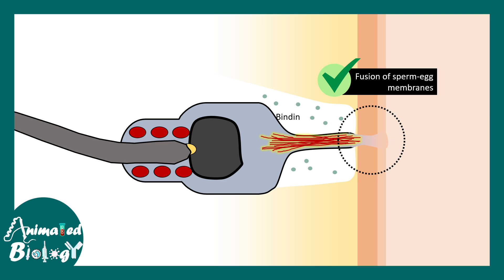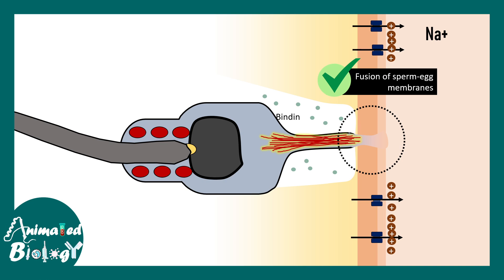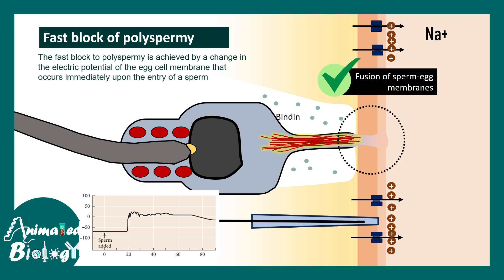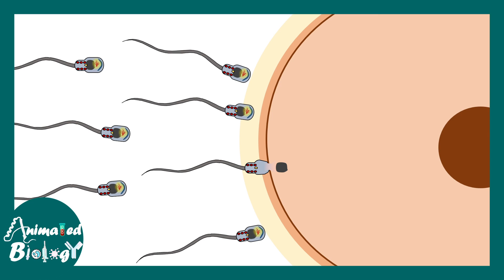The moment fusion happens, there is a quick influx of sodium ions inside the cell, making the inside of the membrane highly positive. Resting membrane potential is typically −70 mV, and due to sodium influx it quickly rises toward zero and beyond, making it increasingly hard for other sperm to enter. This happens almost instantly when the first sperm fuses and is known as the fast block of polyspermy, ensuring one-sperm–one-ovum fertilization.